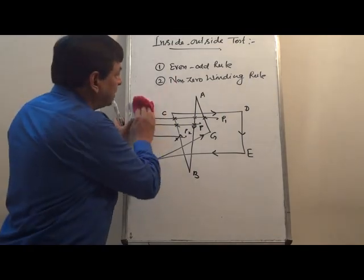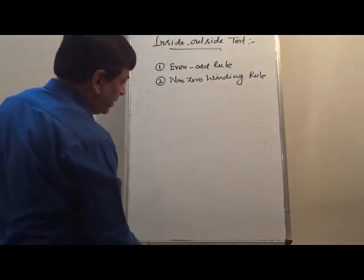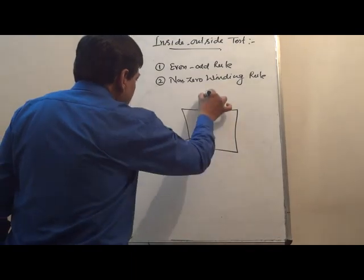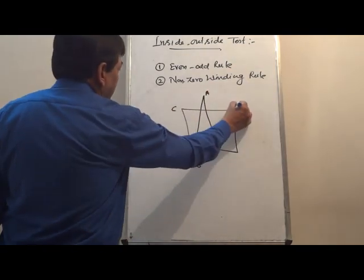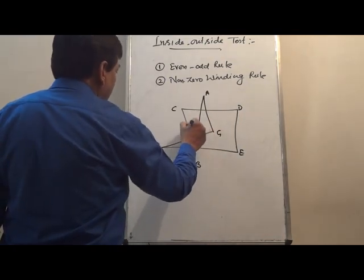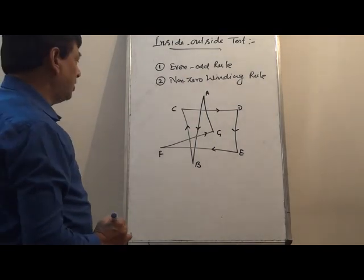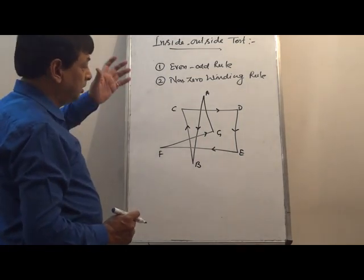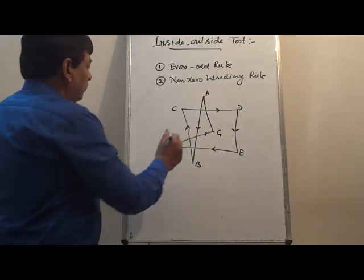Now we take the second rule. Again I draw the polygon — this is A, B, C, D, E, F, and G, with direction assigned. Now I have to check whether a point is inside the polygon boundary or outside using the Non-Zero Winding Rule, so we have to count the number of crossings.